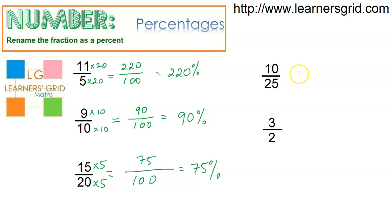We're up to 10 over 25, so again I need a denominator of 100. So 100 divided by 25 is 4, so I multiply 25 by 4, multiply the numerator by 4, and I get 40 over 100 which is 40 percent.